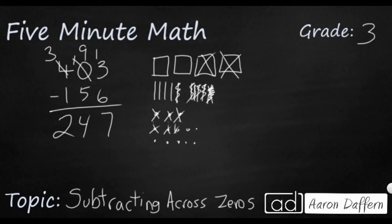If we wanted to double check that you can always add back up. Take your 247, add 156, and you should get 403.